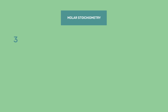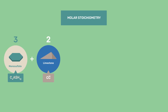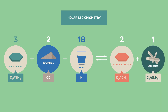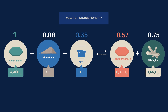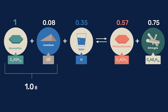With this in hand, we now consider the following chemical reaction. Three moles of monosulphate plus two moles of limestone and 18 moles of water give two moles of monocarbonate and one mole of ettringite. Changing from a molar to a volumetric stoichiometry, we get that one unit volume of monosulphate plus 0.08 unit volumes of limestone and 0.35 unit volumes of water give 0.57 unit volumes of monocarbonate and 0.75 unit volumes of ettringite.